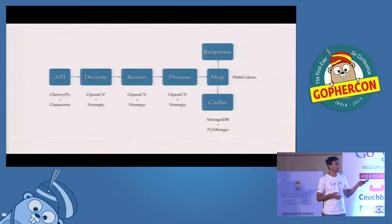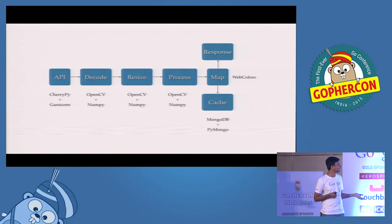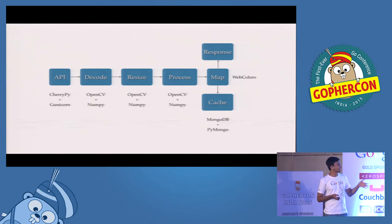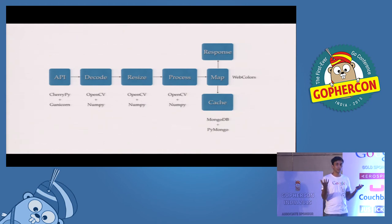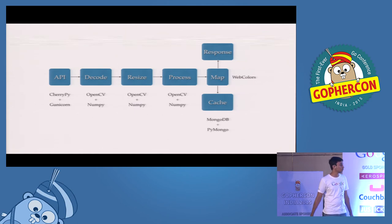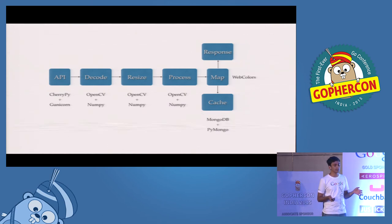This is the existing architecture we had in Python, since we are a Python shop. The API was written with CherryPy and Gunicorn. For decoding, resizing, and processing, we were using OpenCV and NumPy — previously we used Python Image Library PIL. After images are processed, we use a WebColors library that we extended ourselves to map hex values to different color names. We also have a MongoDB replica set as a cache — whenever the same image comes in again, say seven days later, we don't process it again and just generate the histogram from cache.